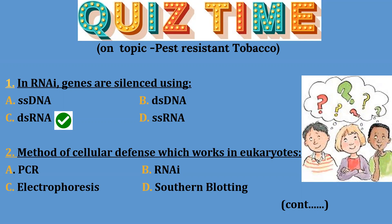Question 2: The method of cellular defense which works in eukaryotes is — Option A: PCR; Option B: RNAi; Option C: electrophoresis; Option D: Southern blotting. The correct answer is RNAi. RNAi is the cellular defense present in all eukaryotes.